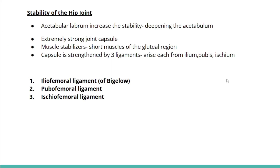Regarding the stability of the hip joint: the femoral head is not fully covered by the acetabulum — only about 40 to 70 percent of the femoral head surface is occupied. Several factors contribute to stability: the acetabular labrum deepens the acetabulum, there is an extremely strong joint capsule, and there are muscle stabilizers — short muscles arranged around the hip joint mainly in the gluteal region.